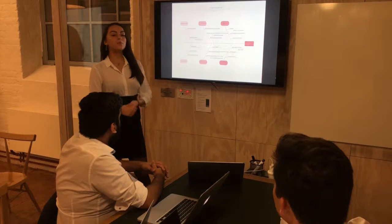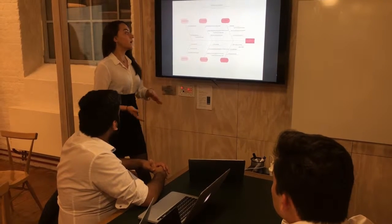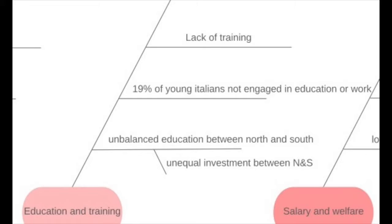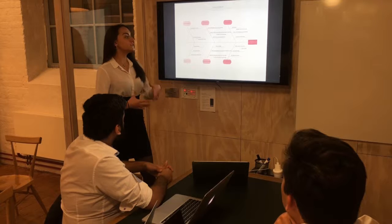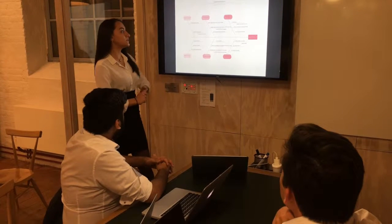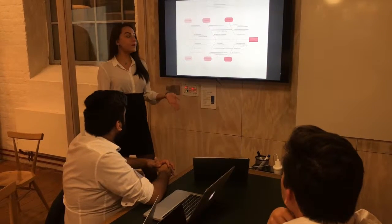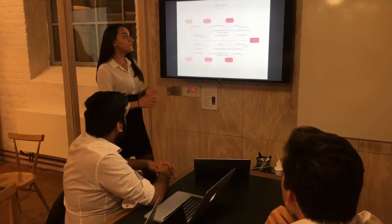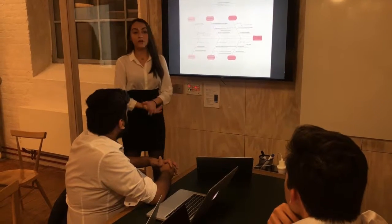We also have the problem of unskilled labor, where the young population has no motivation to seek a job or pursue higher education. This is because of dissatisfaction, but also because the older population is willing to financially sustain the younger population. Additionally, there is a high level of youth unemployment and the average Italian leaves home in their 30s.